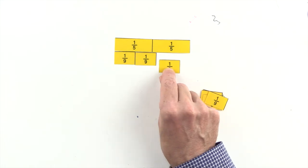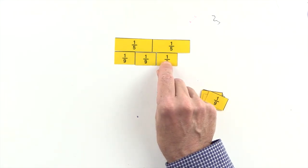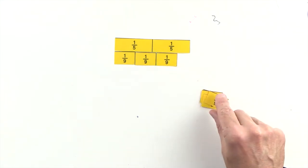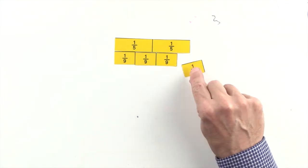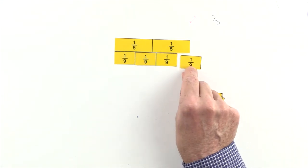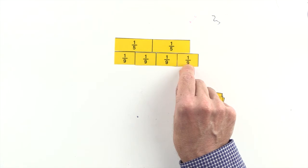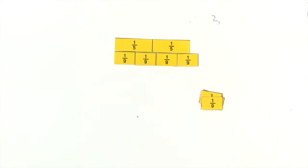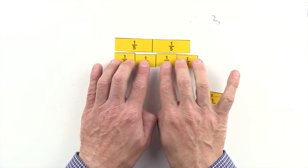Three-ninths are less than two-fifths, and four-ninths are greater than two-fifths, so we can't use ninths to make an equivalent fraction to two-fifths.